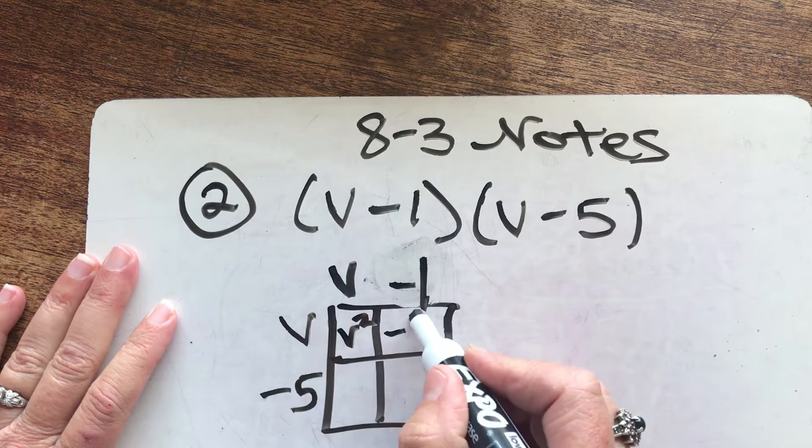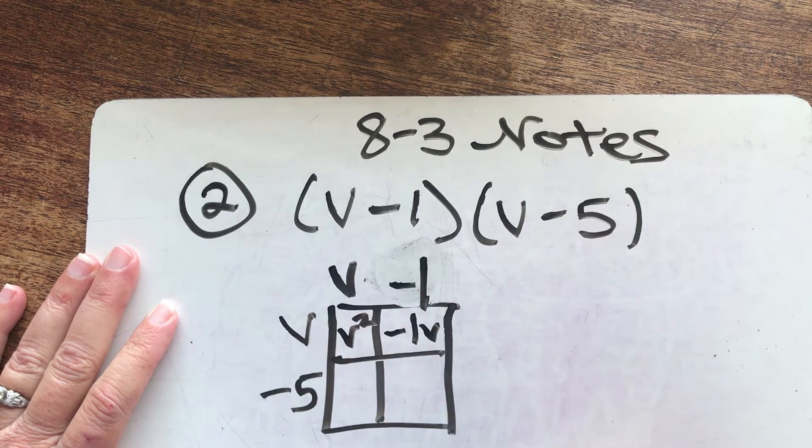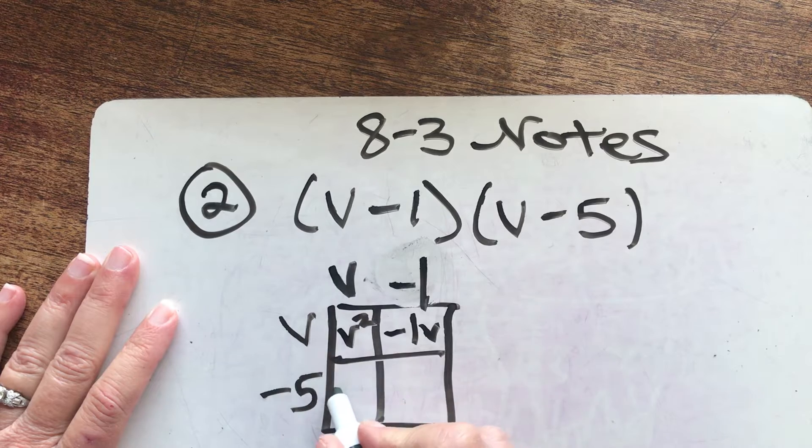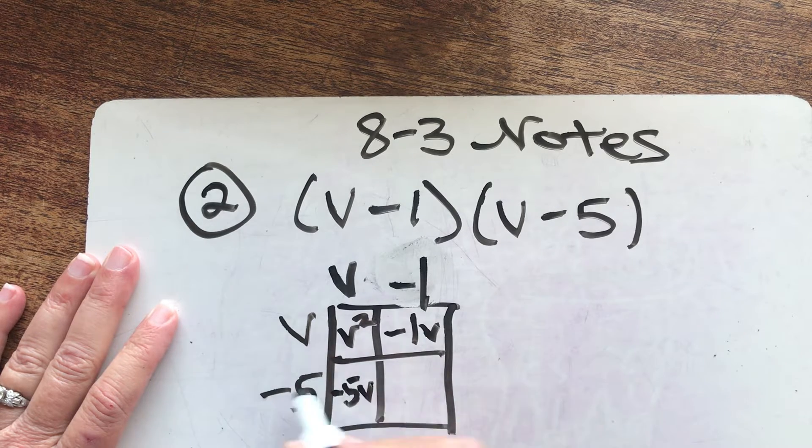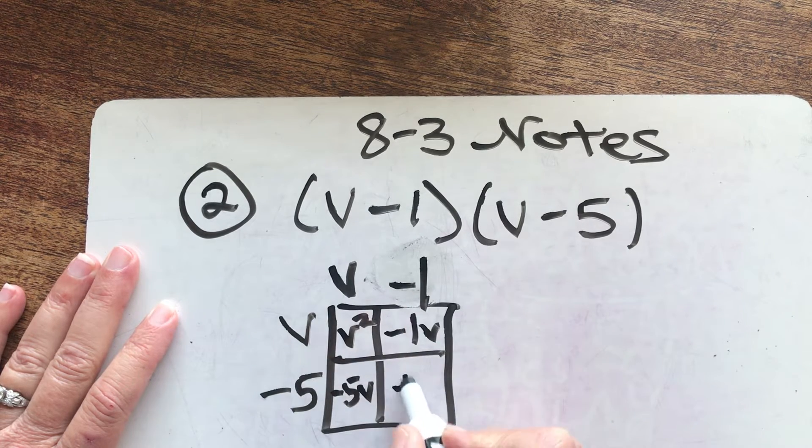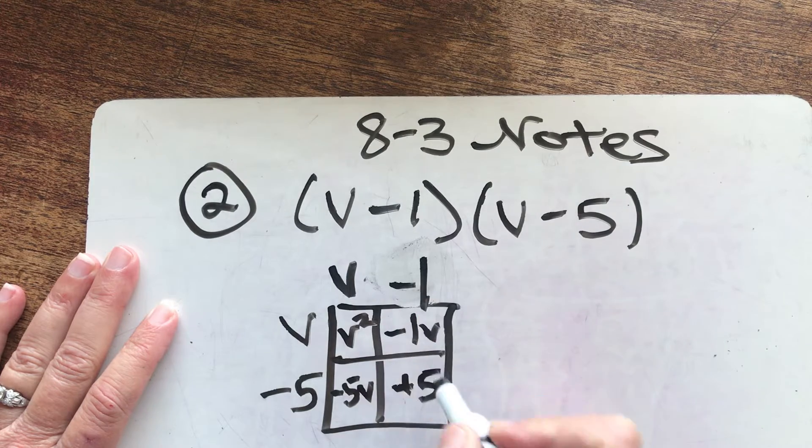V times negative one, negative one V. Negative five times V, negative five V. And a negative times a negative is a positive. And five times one is five.